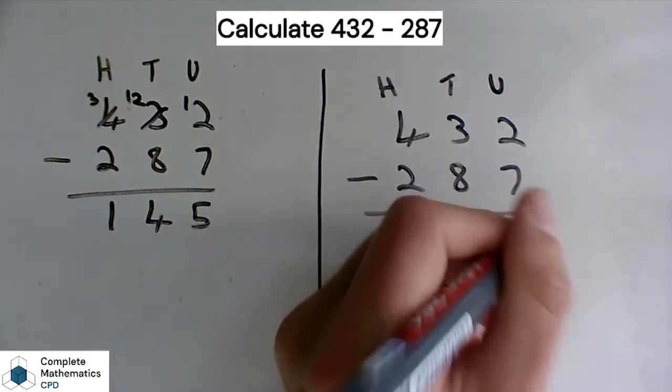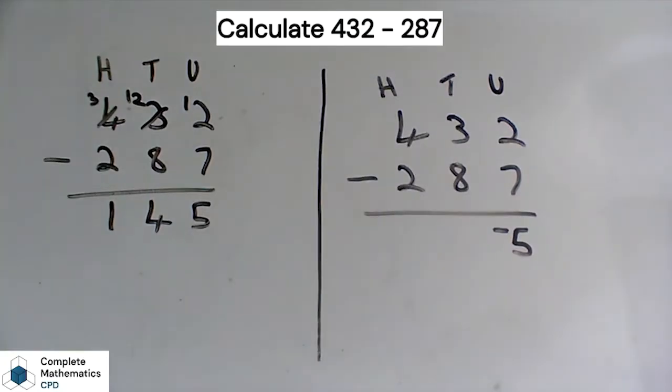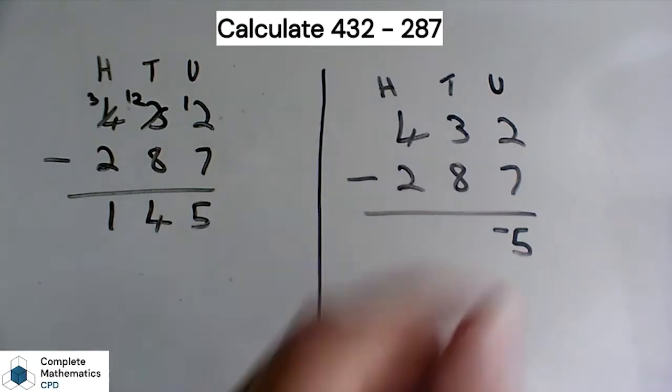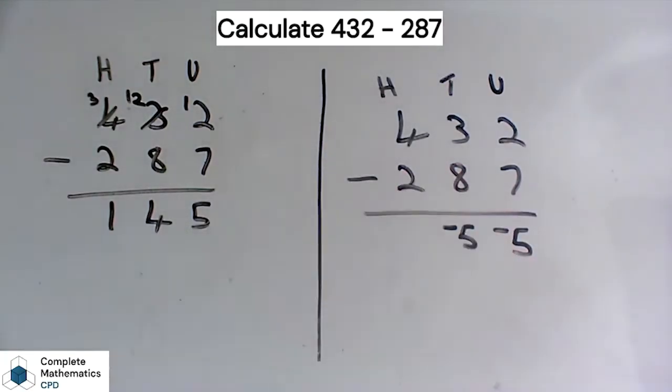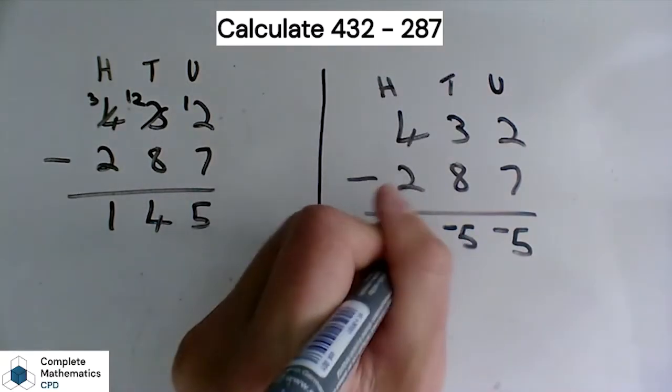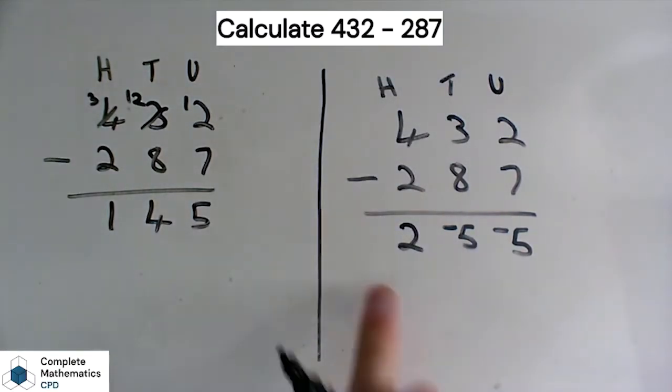So let's write in negative 5. 3 minus 8, again it can be done. 3 minus 8 is also negative 5, and 4 minus 2 is positive 2. So we've ended up with this weird looking numeral here: 2, negative 5, negative 5.